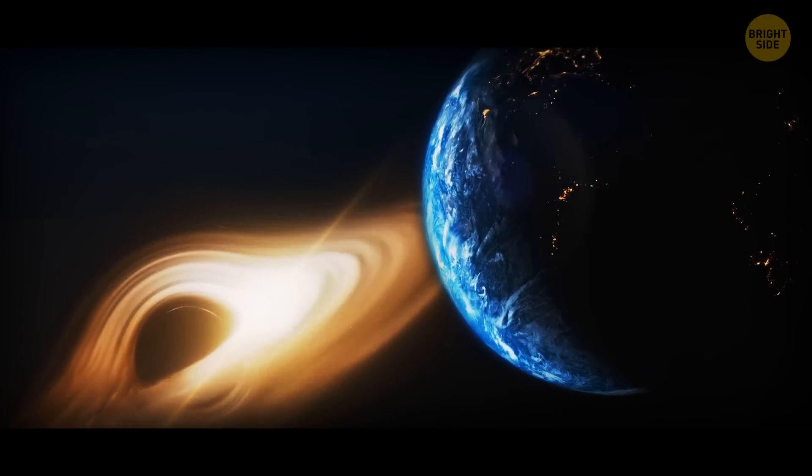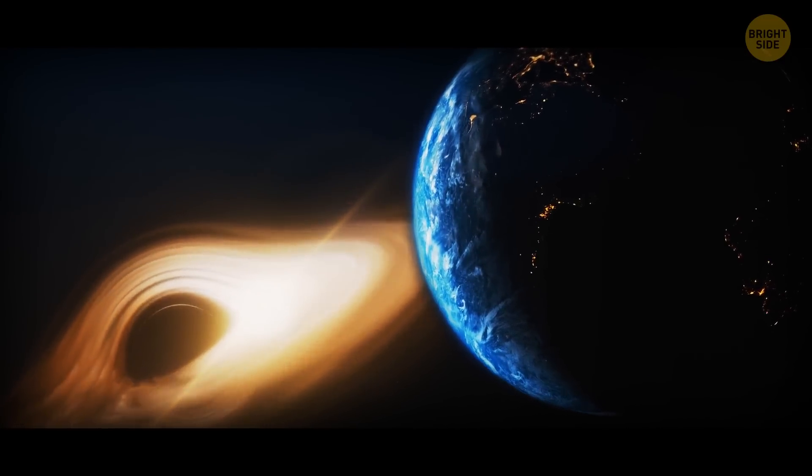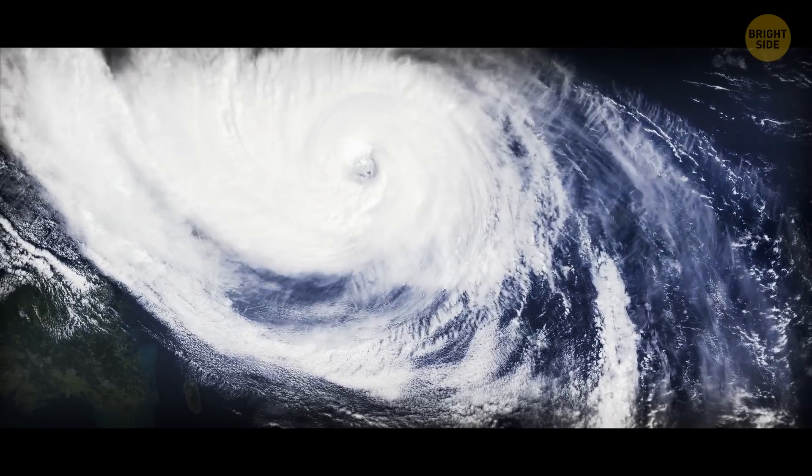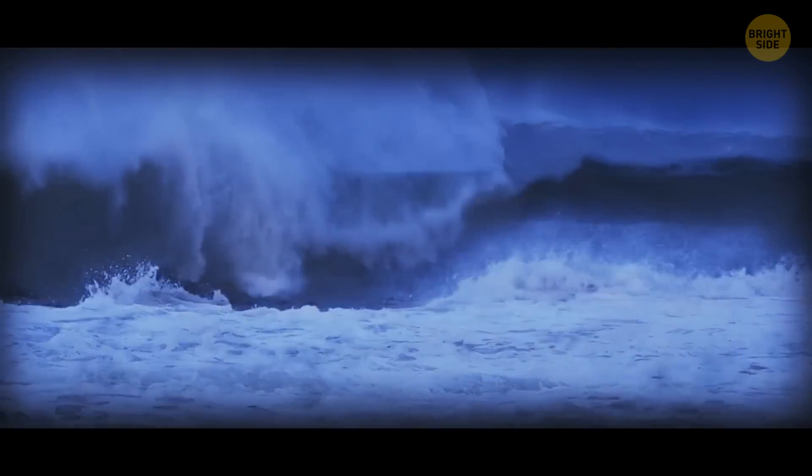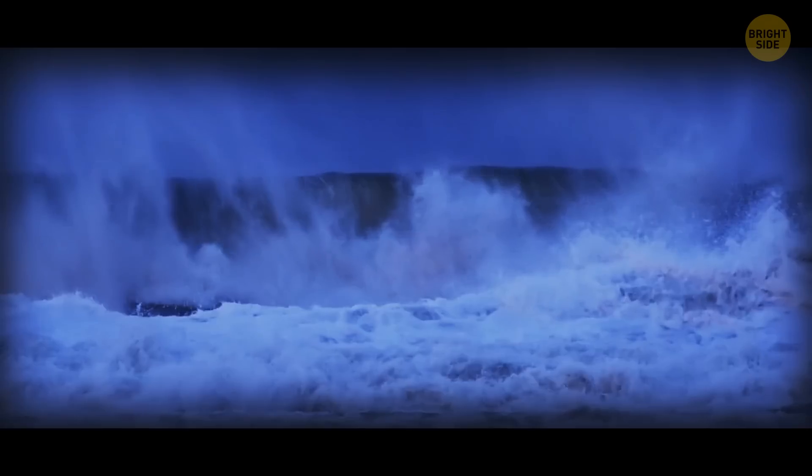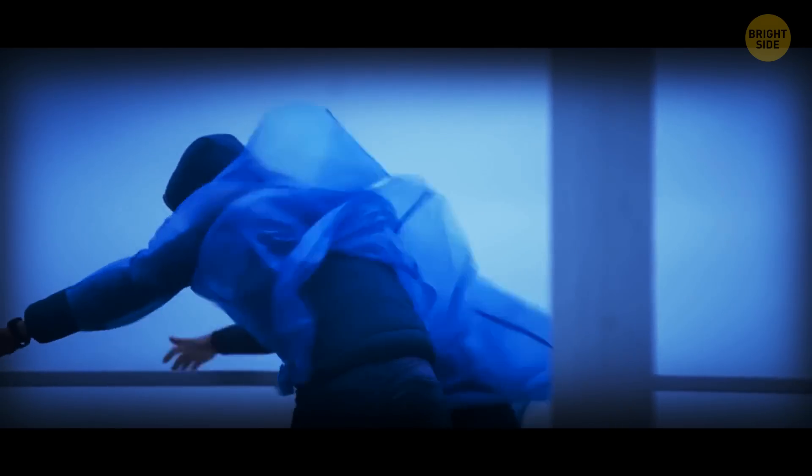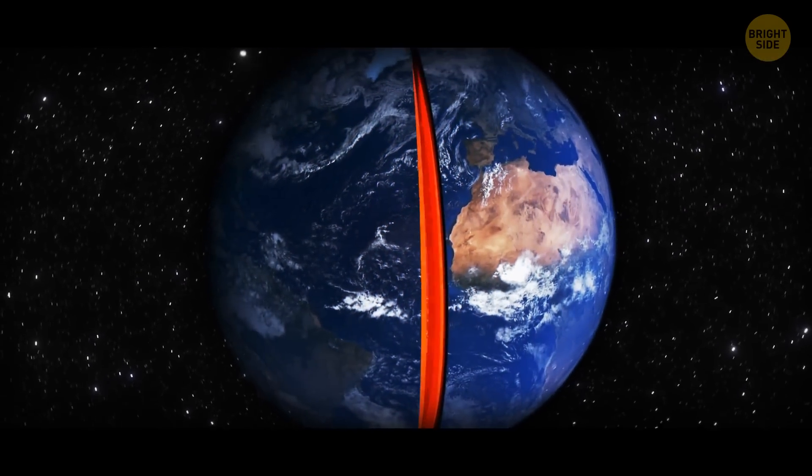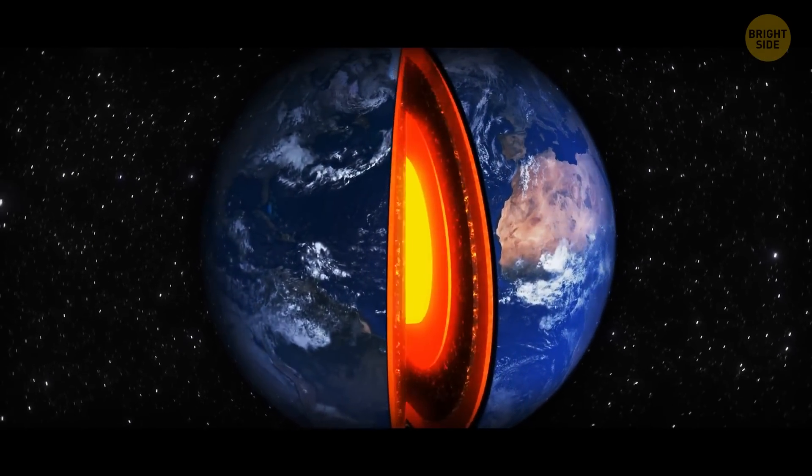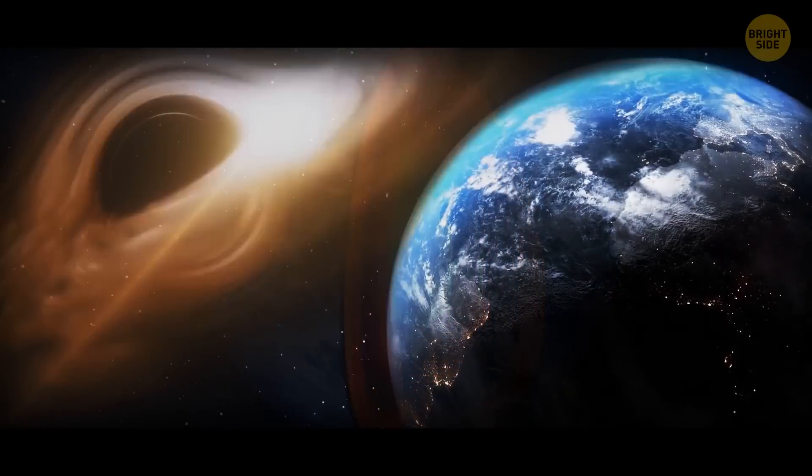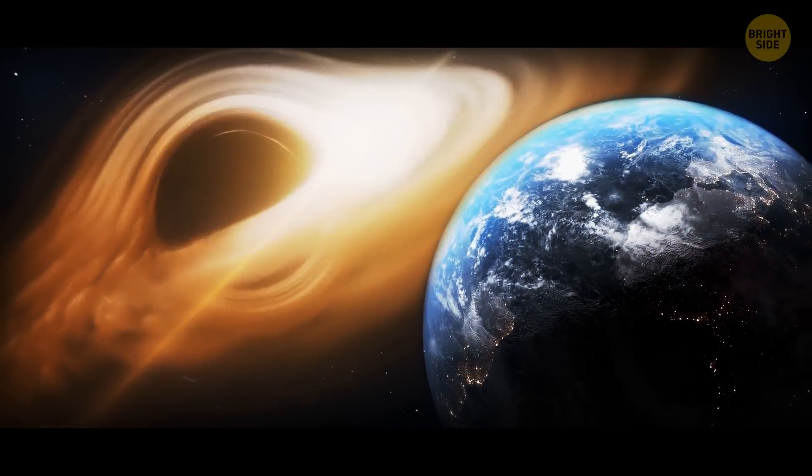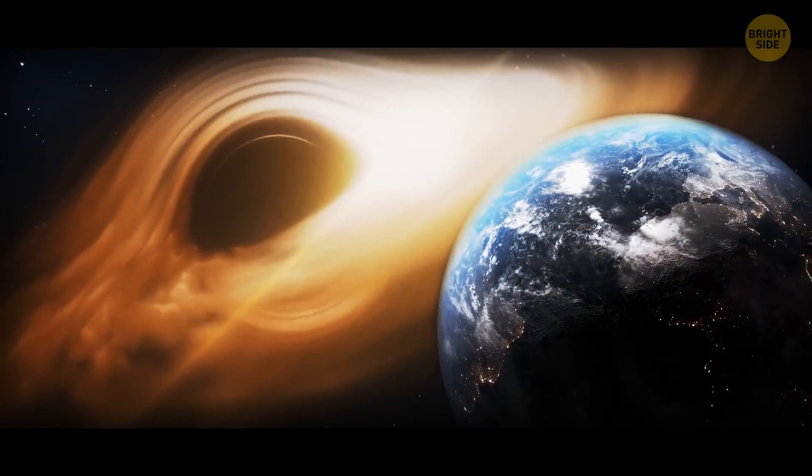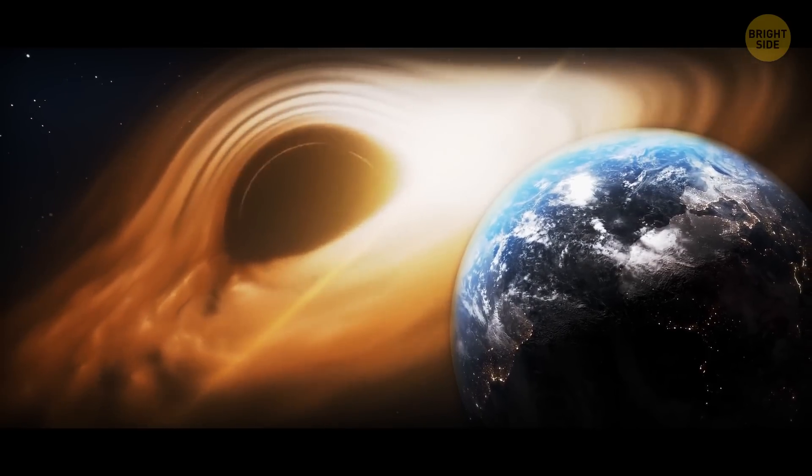First, our planet's atmosphere would be pulled toward the black hole, triggering a massive windstorm. And there'd be huge waves on the oceans, the water itself being distorted by gravitational forces. Imagine seeing seas and oceans getting stretched out. Earth's magnetic field is generated by the motion of molten iron in the planet's core. But now, the extreme tidal forces of the black hole would disrupt this motion, causing the magnetic field to weaken and distort.